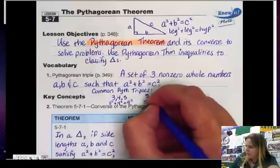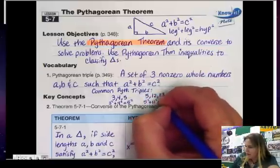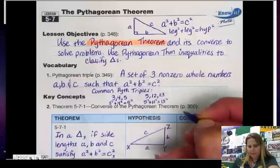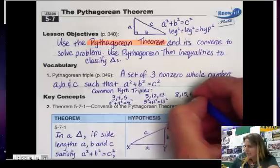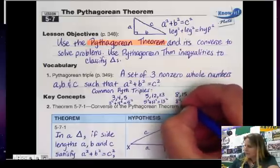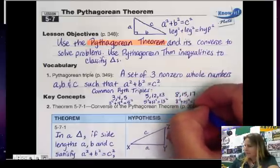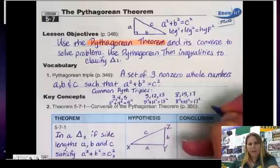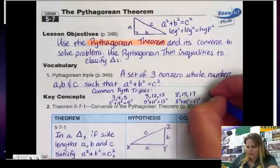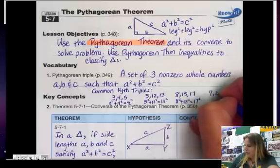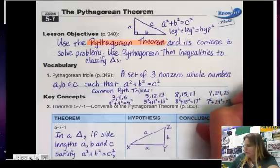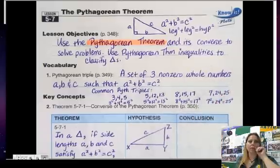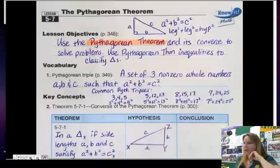Because 5 squared plus 12 squared equals 13 squared. Another set is 8, 15, and 17 — because 8 squared plus 15 squared equals 17 squared. And one more: 7, 24, and 25 — because 7 squared plus 24 squared equals 25 squared. Those are some common Pythagorean triples you might run across.